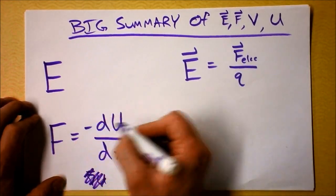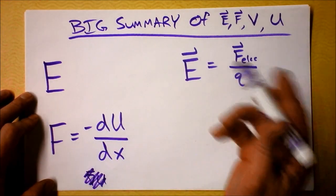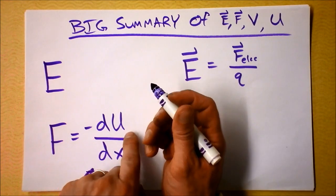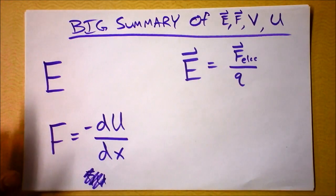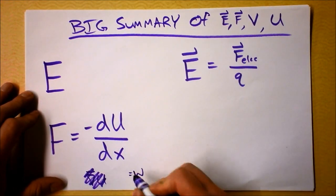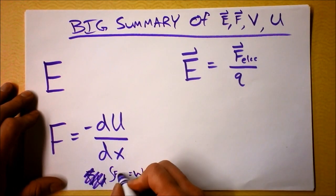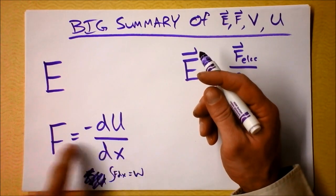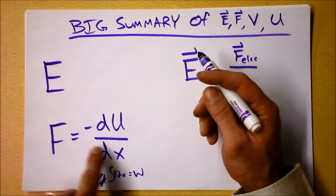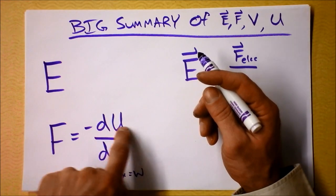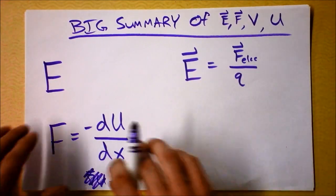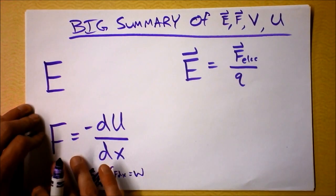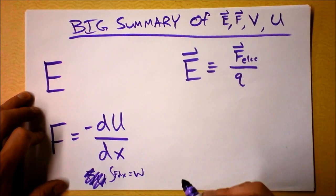A force change is a change in energy. That's the same statement as work — work being the integral of force over distance. That's this equation multiplied by dx on both sides and integrated, because the integral of dU is just U, the potential energy. The change in potential energy is work, and that's the definition of work. So this equation is a definition.